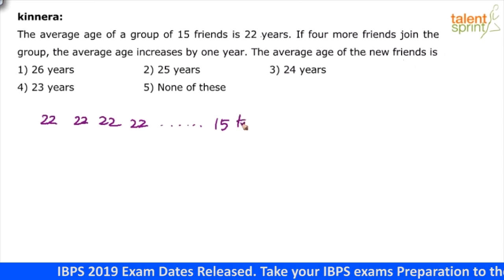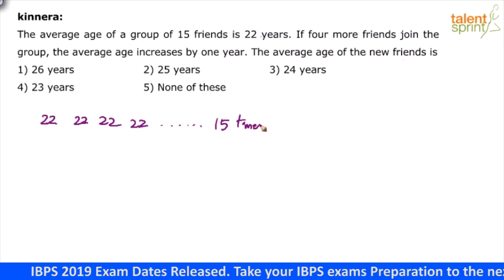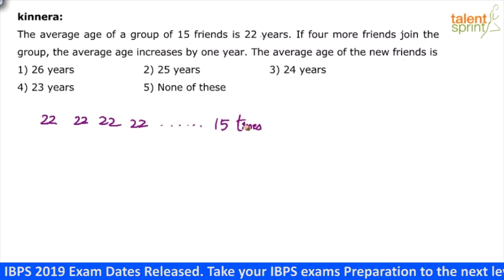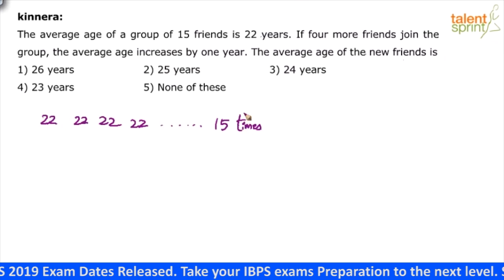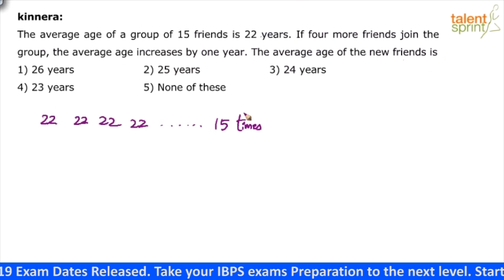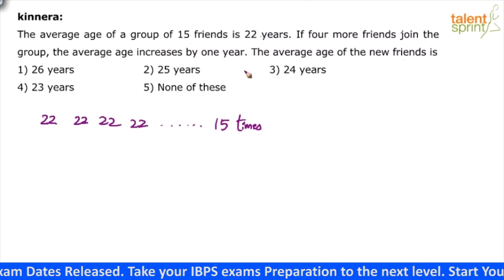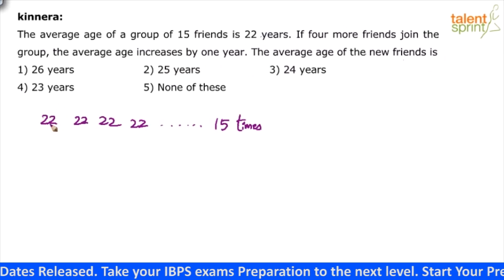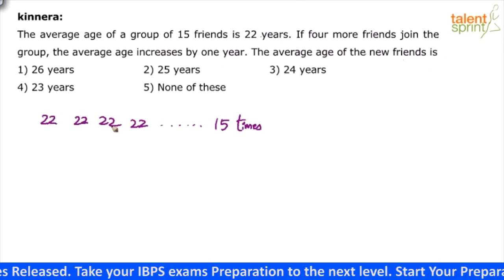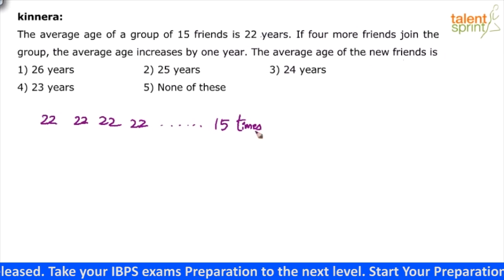We have this value 15 times. Average age of a group of 15 friends is 22, so I can say each person is 22 years old — 22, 22, 22, and so on, 15 times.